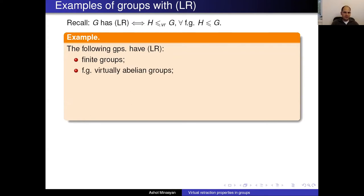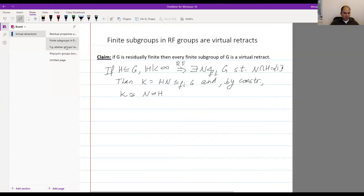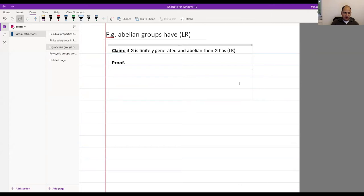The second and most important example: finitely generated virtually abelian groups. Let me give a quick argument why abelian groups have property LR. If G is finitely generated and abelian, then it has LR. This is much easier to prove than the virtually abelian case.